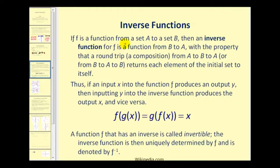More formally, if f is a function from a set A to a set B, then an inverse function of f is a function from B to A, with the property that a round trip or composition from A to B to A returns each element of the initial set to itself. This leads us to: f of g of x equals g of f of x, which equals x. A function that has an inverse is called invertible, and the inverse function is denoted by inverse function notation — be careful, this looks similar to exponential notation, but this is inverse notation for function f.